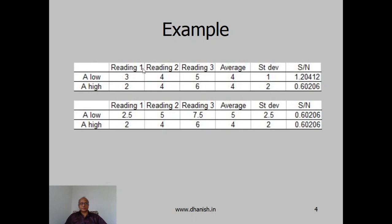For example, suppose in an experiment when A is at a low level, we get the readings 3, 4 and 5, resulting in an average of 4, standard deviation of 1 and signal to noise ratio of 1.20. And when A was high, we got readings 2, 4, 6, resulting in an average of 4, standard deviation of 2 and signal to noise ratio 0.6. So signal to noise ratio is highly different, but the average is same and standard deviation is different.